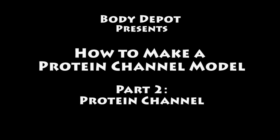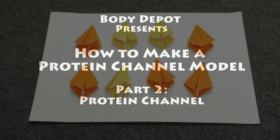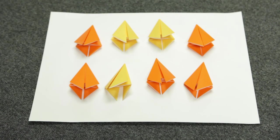Part 2. This is Part 2 of how to make a protein channel. In this video, we'll show you how to take the 8 amino acids created in Part 1 and connect them to make a protein channel model.